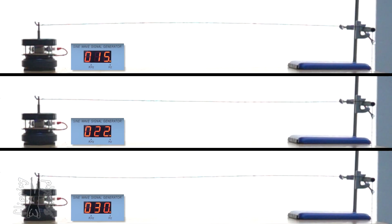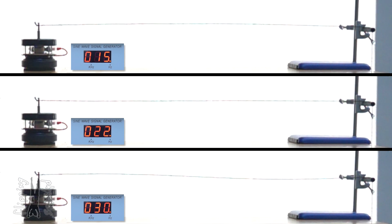So, here's the question. If standing waves are only allowed at 15 and 30 hertz and nowhere in between on this string, then why do we see a standing wave pattern at 22 hertz?